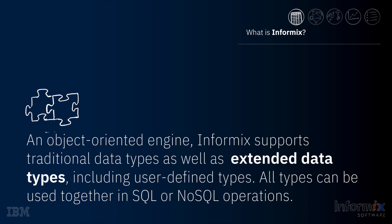IBM Informix's architecture supports traditional SQL data types like characters and numerics and non-traditional data types. The engine includes built-in support for extended types like JSON and BSON, hierarchical, time-oriented, flat earth spatial, and more. You can also define your own data types and access methods to manipulate your custom types to solve business problems. For example, one of the world's largest airlines uses a custom data type inside Informix to calculate ticket prices for their flights in real time.